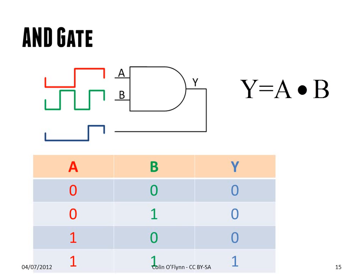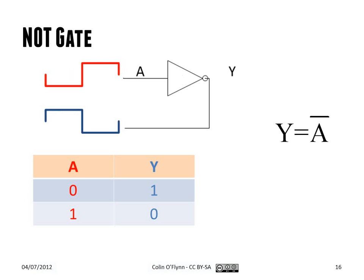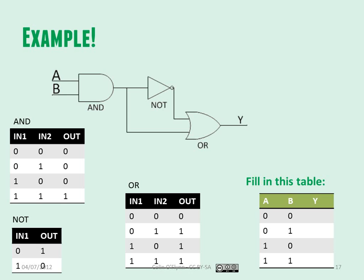The AND gate is the next basic gate — the output is one when both A and B are one. The NOT gate inverts the output, so the output is simply the inverse of the input.